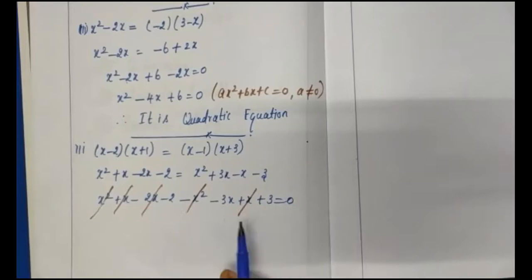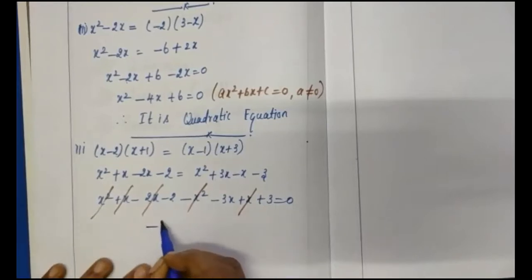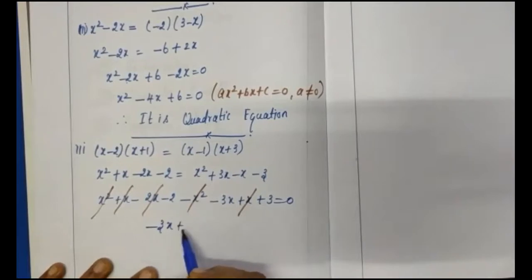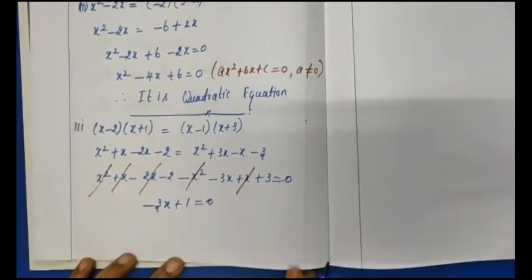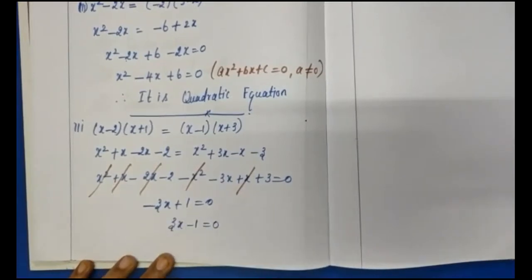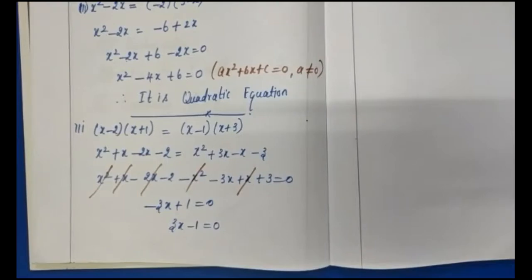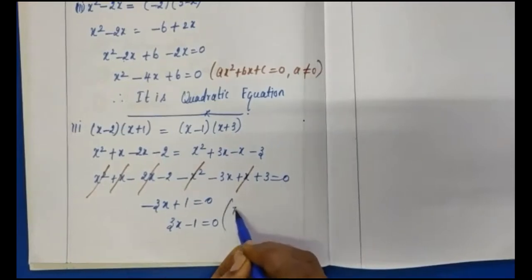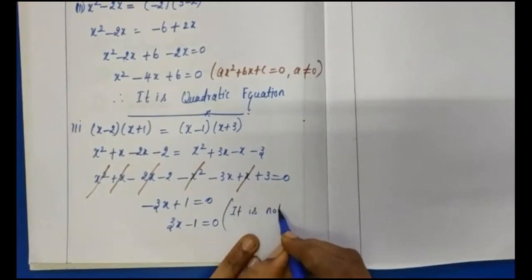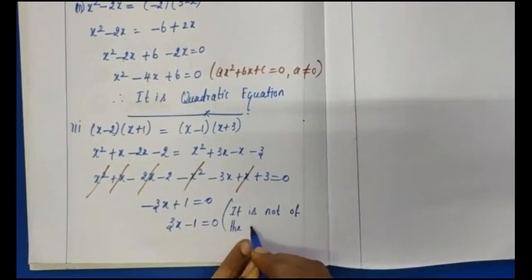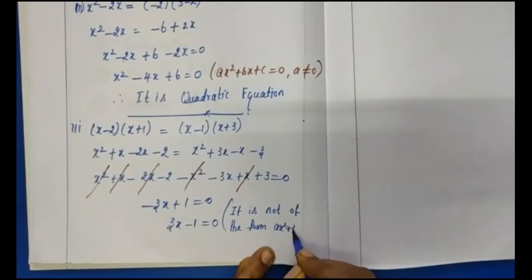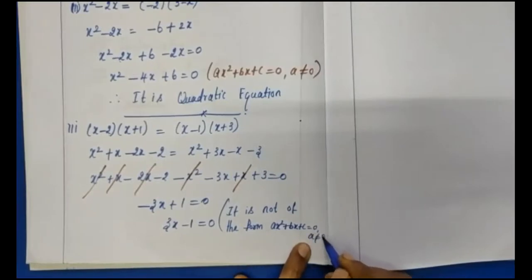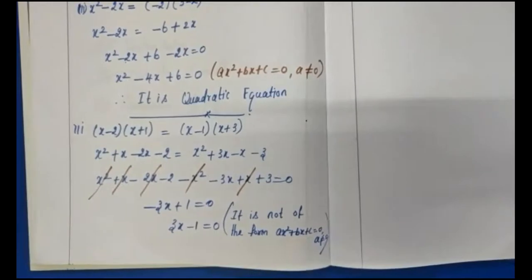After cancellation, the remaining terms give minus 3x minus 2 plus 3 equals 0, which is minus 3x plus 1 equals 0, or multiplying by minus 1: 3x minus 1 equals 0. This is not of the form ax squared plus bx plus c equals 0, since there is no x squared term — a equals 0. Therefore, it is not a quadratic equation.